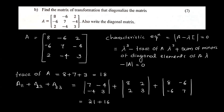Computing the sum of minors: 21 minus 16, plus 8 into 3 gives 24 minus 4, plus 56 minus 36. That is: 21 minus 16 plus 24 minus 4 plus 56 minus 36, which equals 45.